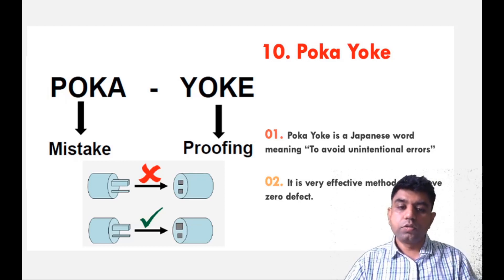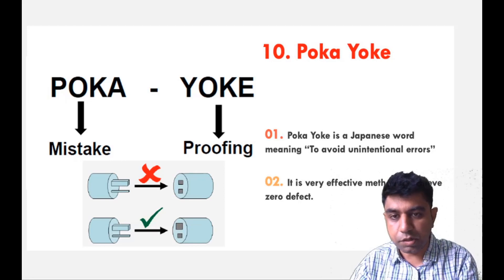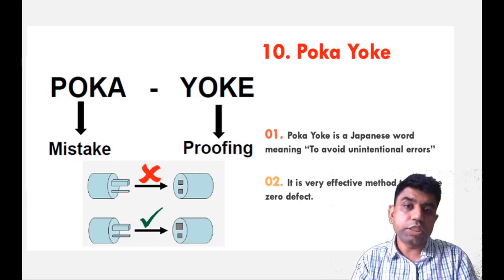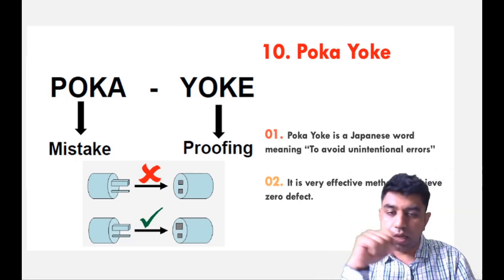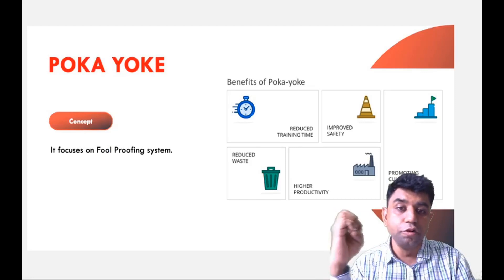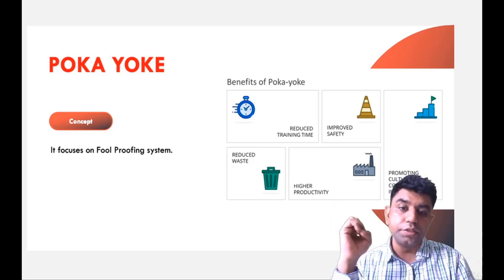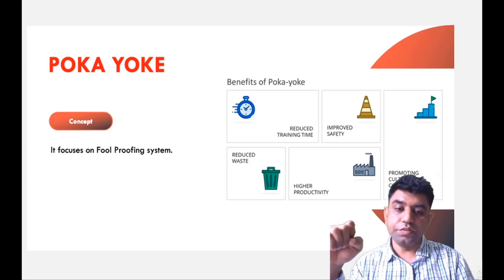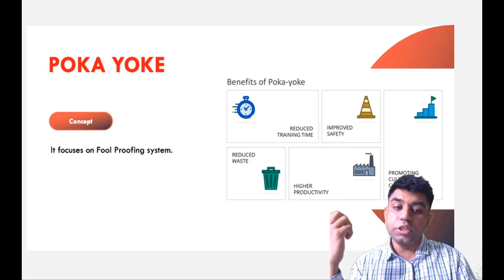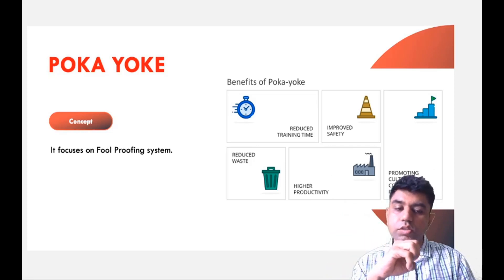Poka Yoke is a very effective method to achieve zero defects. It focuses on errors which naturally happen — we don't have any intention to cause damage, but it happens very naturally. Such errors may be avoided by implementing very small steps. The concept of Poka Yoke focuses on the foolproofing system. Once you have a foolproof system, you can have enormous benefits: reduced training time, reduced waste, improved safety, higher productivity, and promoting a culture of continuous improvement — which is also in line with Kaizen.